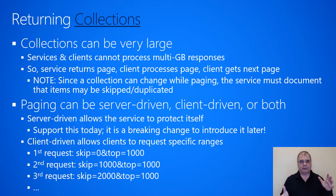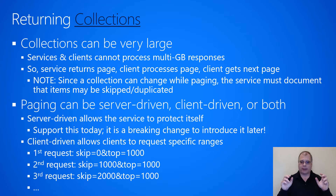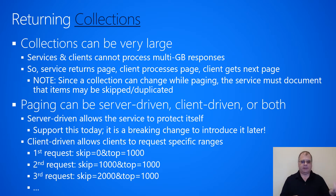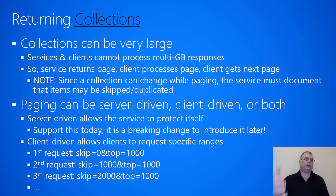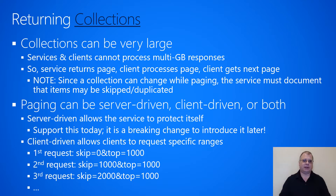The client processes those items, then goes back to the service and says: skip the first 1,000 because I've already processed them, and give me the next 1,000. Then if it wants more, it requests skip 2,000 and give me the next 1,000, and so on. This continues until the service returns fewer items than requested — for example, only 500 when 1,000 were requested — and the client knows it has reached the end of the collection.